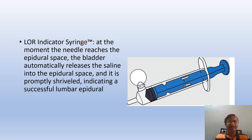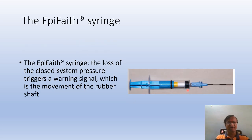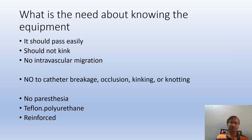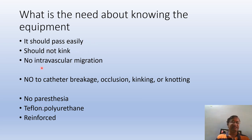The Epiphyde is a trigger system — the rubber shaft moves in. Regarding catheter requirements: it should pass easily, it should not kink, and there should be no intravascular migration. It should pass easily and not kink, but just because it passes easily does not mean it should kink. It must not migrate into a vessel.